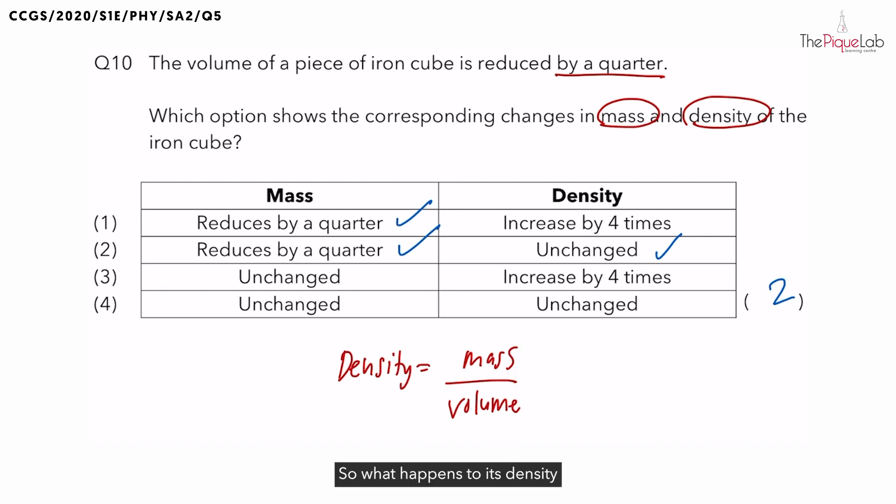So what happens to its density if you cool the iron cube? Should density increase or decrease? When you cool the cube, what happens to its volume? The cube contracts and the volume decreases. Since mass of the iron cube stays the same and volume and density have an inverse relationship, density should increase.